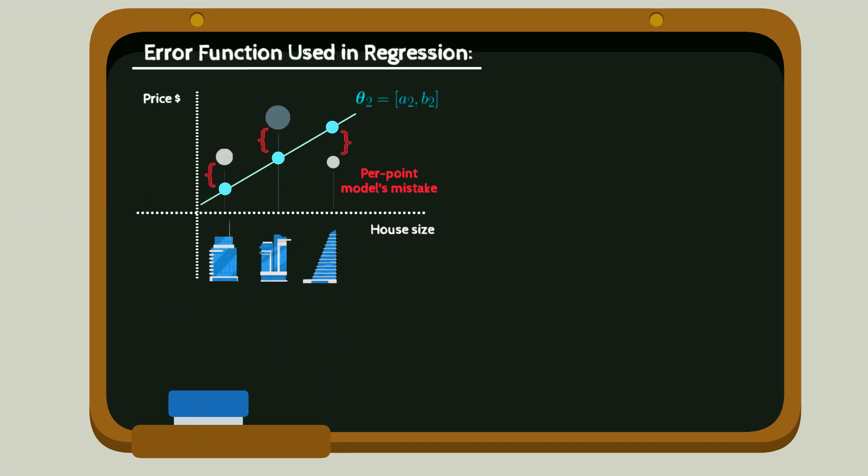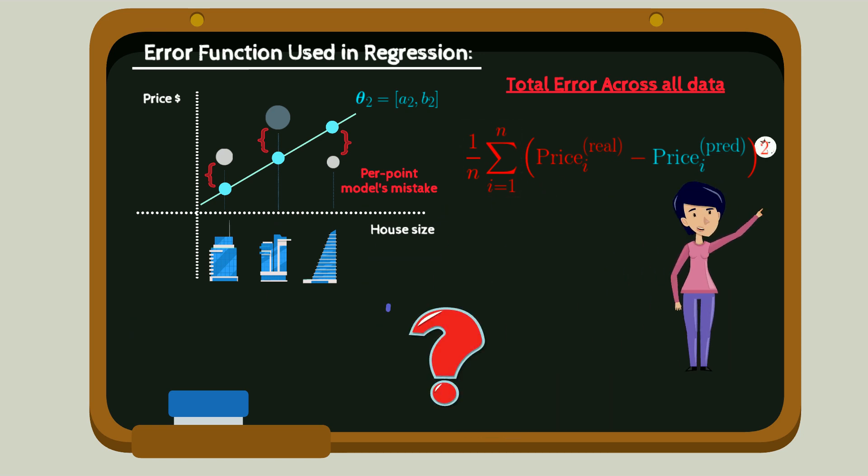What error function to use? It's common in regression to use average sum of squared errors. Intuitively, sum of squared errors measure the distance between model predictions and real outputs and then attempt to minimize the average distance across all data points. But why squared errors, not errors to the power 3 or 10?